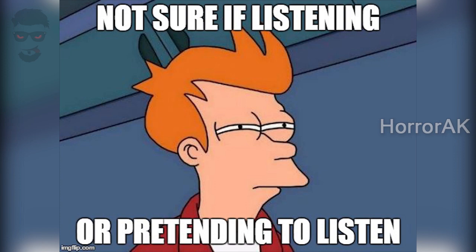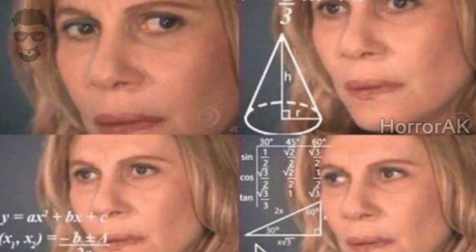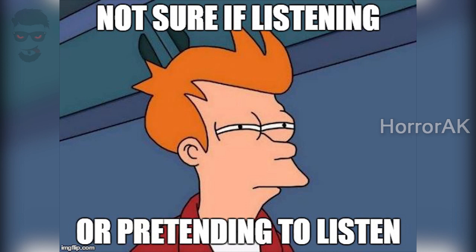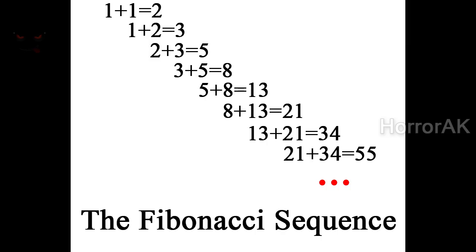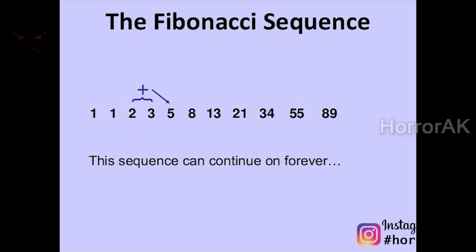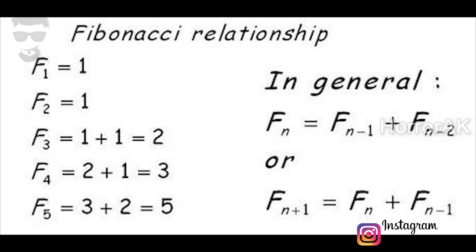If you want to learn math for 30 seconds, I will be able to teach the maximum. The Fibonacci sequence is a series of numbers where each number adds the previous two numbers. The Fibonacci sequence is 0, 1, 1, 2, 3, 5, 8, 13. The expression is: xn = xn-1 + xn-2.